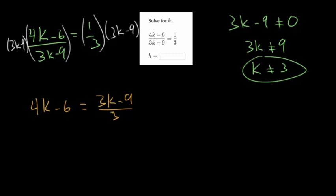Now let's get rid of this fraction as well. We'll multiply everything by 3, and we'll have to distribute that. So we get 12k minus 18 is equal to 3k minus 9, since over here, the 3s will cancel each other out.